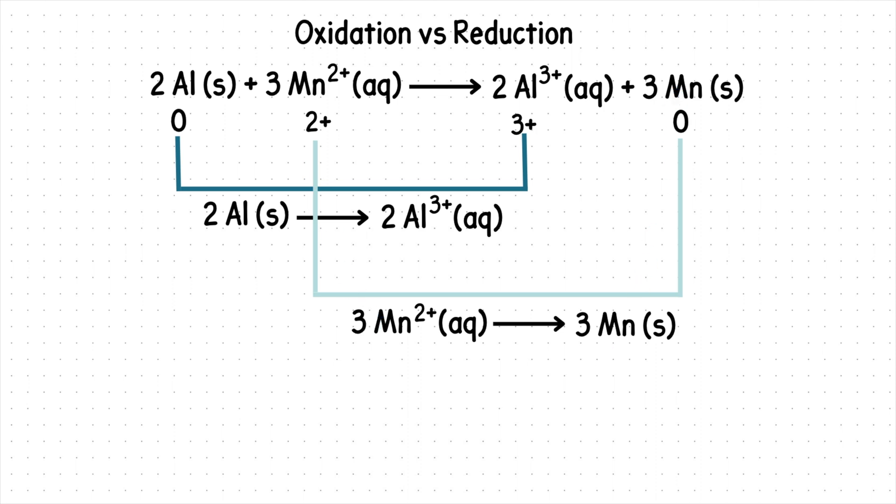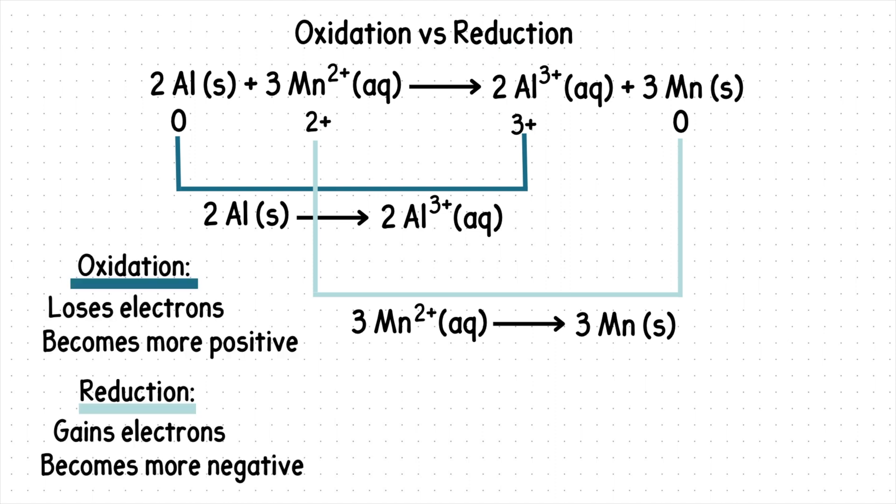Now we can identify which half reaction is oxidation or reduction. In an oxidation reaction, we lose electrons. And in a reduction reaction, we gain electrons. An easier way to think of this is in oxidation, the oxidation numbers become more positive. And in reduction, the oxidation numbers become more negative or reduce. Don't forget about your electrons.